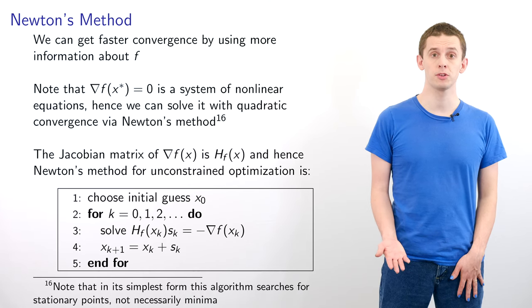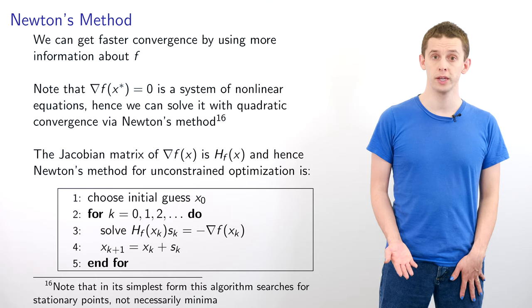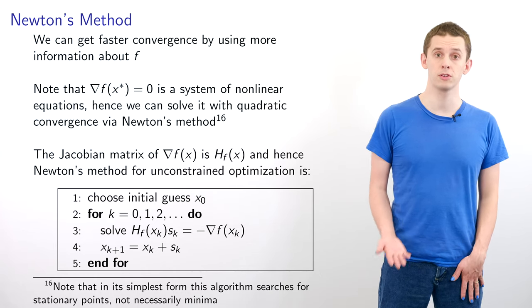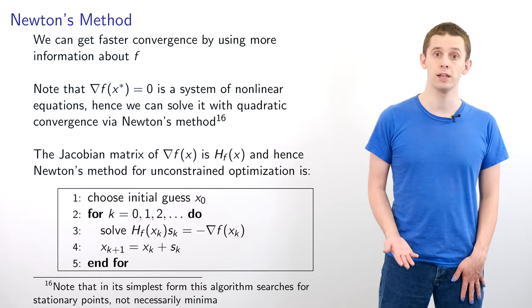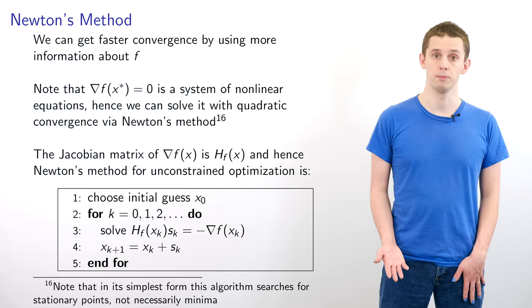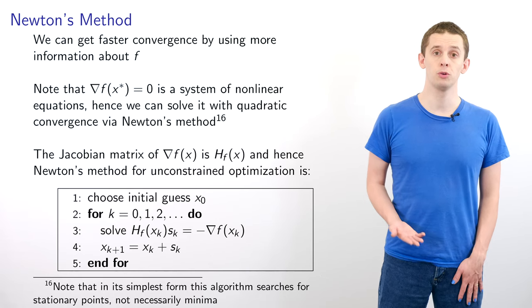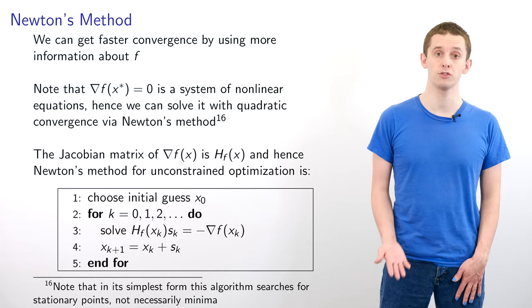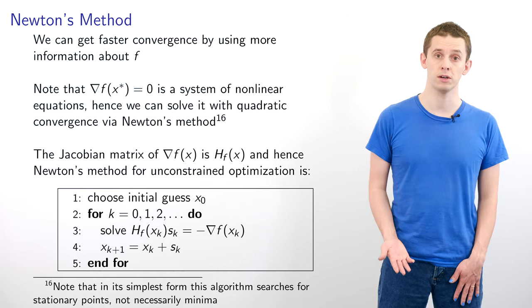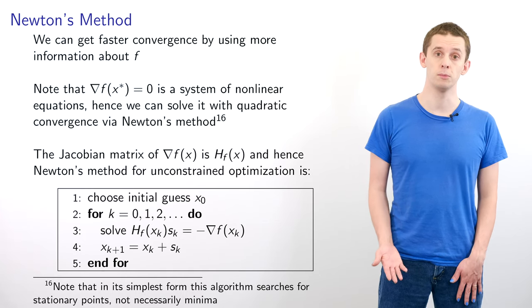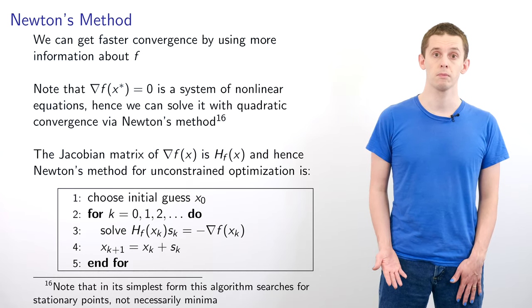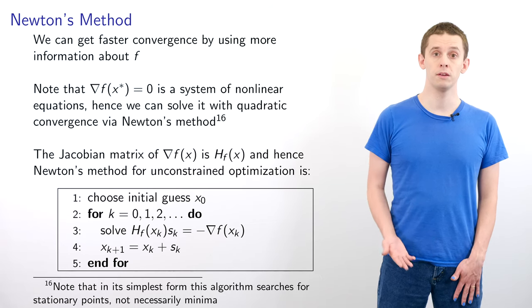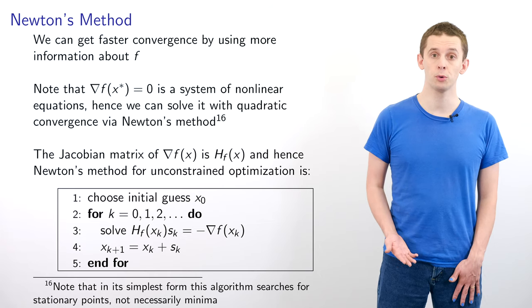In our example we saw that steepest descent converges reliably; however in some situations the convergence rate can be rather slow, and one of the reasons for this is that steepest descent only makes use of very limited information about our function f — at each step we're only making use of an instantaneous measurement of grad f. We can get faster convergence by using more information about our function. One way to approach this is to look at our optimality condition for a stationary point where grad f of x* equals 0. This is a system of nonlinear equations and therefore we can solve it with quadratic convergence using Newton's method, and to do this we'll need the Jacobian of grad f, which will be equal to the Hessian of f.